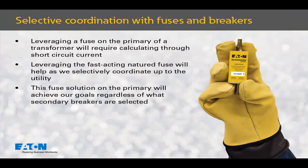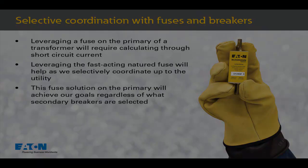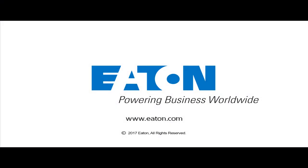Leveraging a fuse on the primary of a transformer will require calculating through short circuit current. Leveraging the fast-acting nature of the fuse will help as we selectively coordinate up to the utility. This fuse solution on the primary of this transformer will achieve our goals regardless of what secondary breakers are selected. Thank you for taking the time to talk about this technical topic.